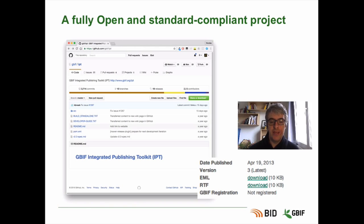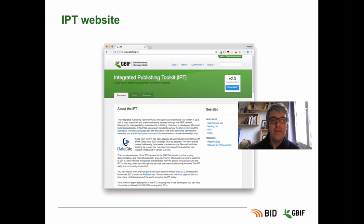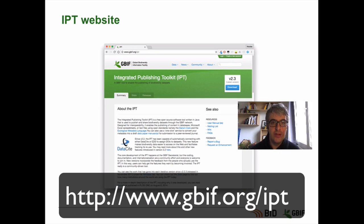IPT is a standard-compliant project, and your datasets are made available in different standard formats for maximum interoperability. It's also an open-source project, and while it's developed by the GBIF secretariat, external contributions such as bug reports or new translations are always welcome. Here is the IPT page on the GBIF website, www.gbif.org, where you can find more information, a link to the full IPT manual, and also the download link.